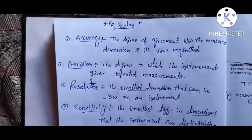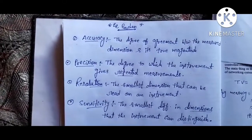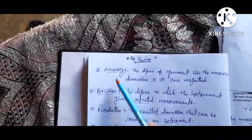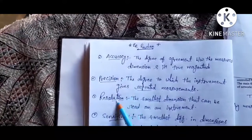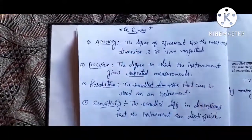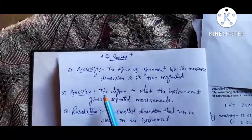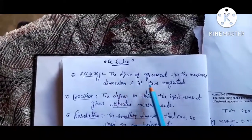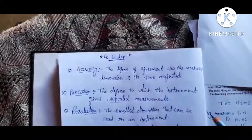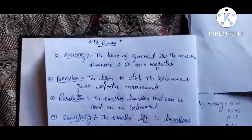Today we are talking about some definitions commonly used in engineering: accuracy, precision, resolution, and sensitivity. We will differentiate all of them one by one. First, accuracy is the degree of agreement between the measured dimension and its true value. Let's look at some examples.